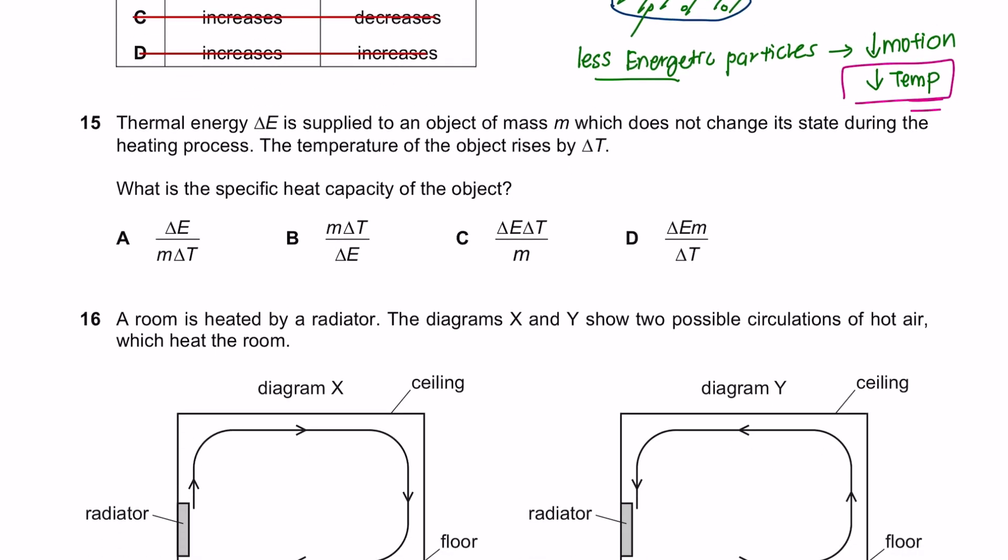Question 15. Thermal energy is supplied to an object of a mass M, which does not change its state during the heating process. The temperature of the object rises by delta T. What is the specific heat capacity of the object? Again, we are being tested on our knowledge on formulas. The formula of thermal energy is mass times specific heat capacity times delta T. And we are looking to find what is the specific heat capacity, C. So rearranging this formula, we will get change of energy divided by mass and delta T. So the answer here is A.